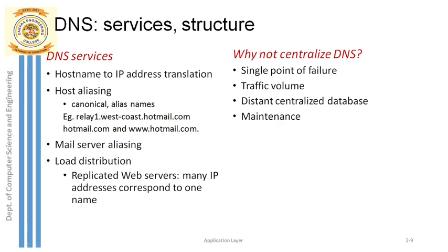This alias name is given to the complicated address relay1.westcoast.hotmail.com, which we call the canonical hostname. The moment a user types hotmail.com, they will be redirected to the web page with the address relay1.westcoast.hotmail.com. Just like using a pet name to identify a person, this is host aliasing, and it is one of the services provided by DNS.